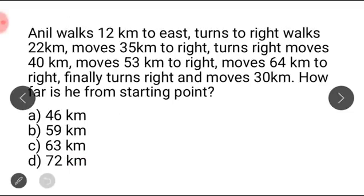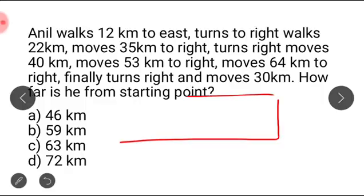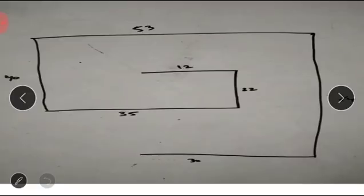He walks 12 kilometers to the east, then turns right and walks 22 kilometers. Then he moves 35 kilometers to the right — right means towards south, then west. Then again he moves right, which means towards north, and finally he turns and moves 30 kilometers.